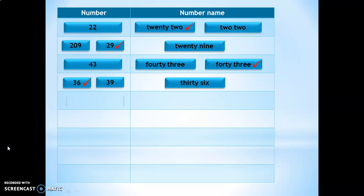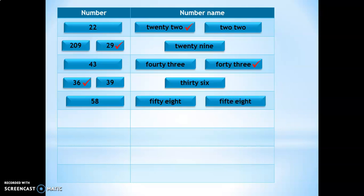Let us do one more example in this type. What number is this? 58. What is the number name corresponding to 58 — FIFTY EIGHT or FIFTEENEIGHT? The correct answer is FIFTY EIGHT. 50 is yet another spelling in which children tend to make mistakes, so giving them choices makes the child decide on the correct spelling.